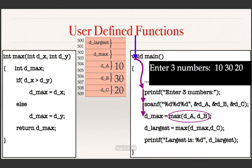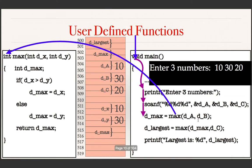The next statement is an assignment statement. When an assignment statement is processed, first the RHS of the statement will be processed, and in this case it is a function call. A function instance needs to be created because this function is invoked. A function instance of max is created, and this function has three variables: dX, dY, and dMax.